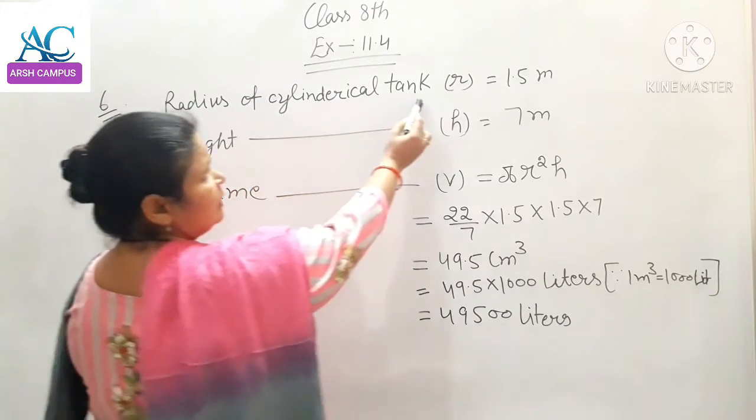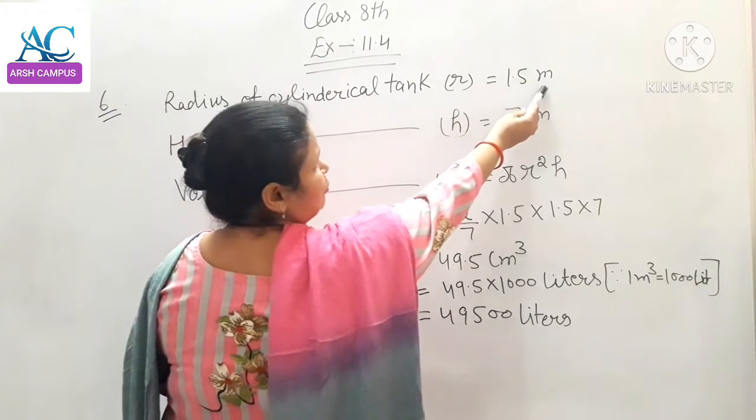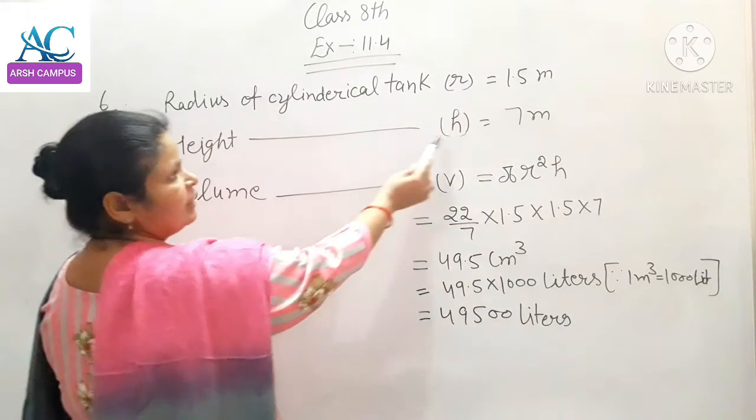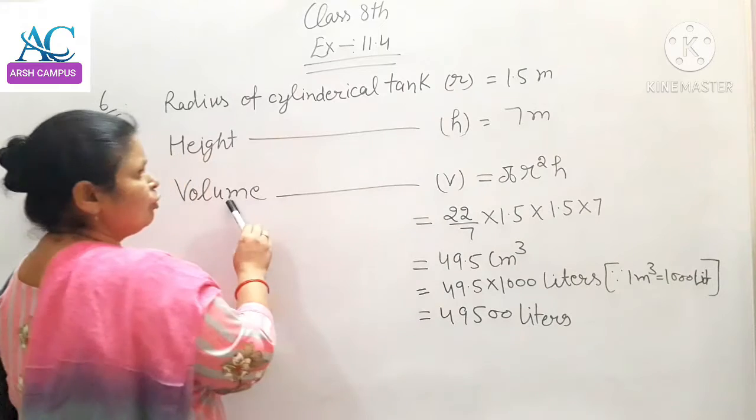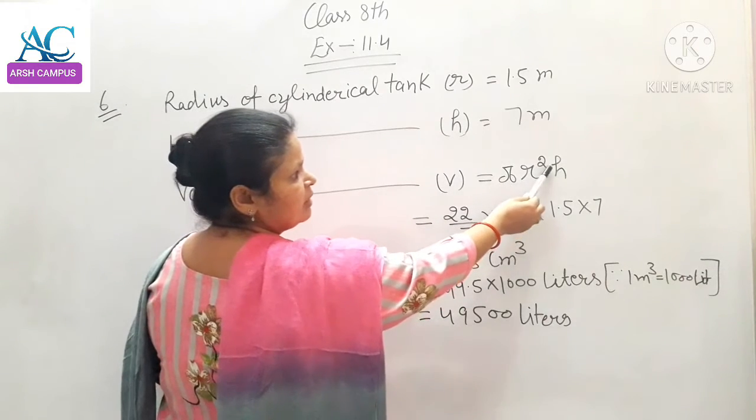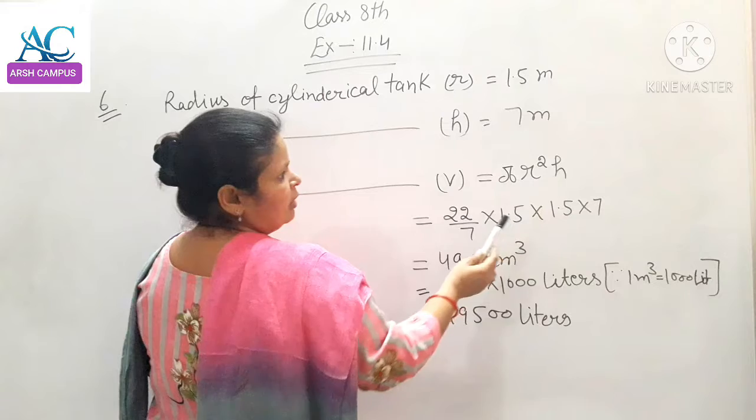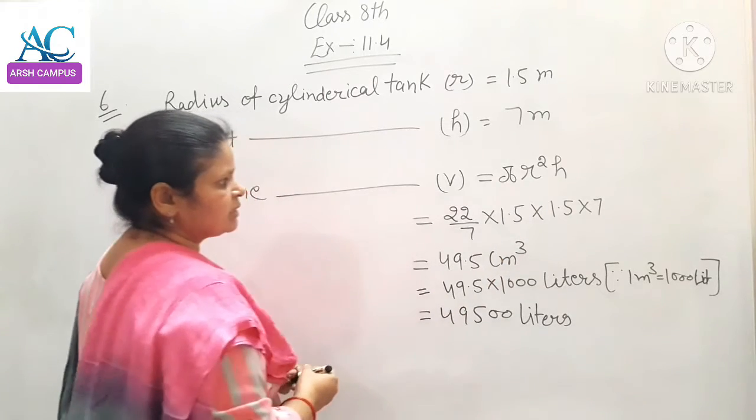Radius of cylindrical tank is 1.5 meters. Height of cylindrical tank is 7 meters. Volume is pi r square h. Cylinder volume is pi r square h.